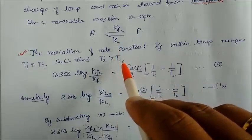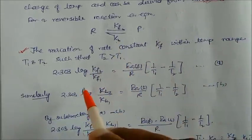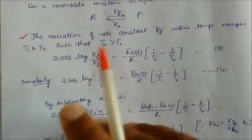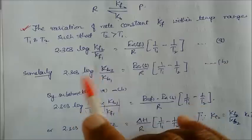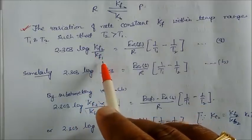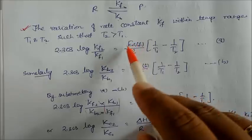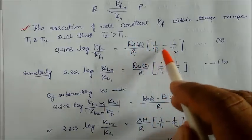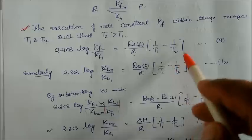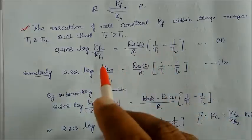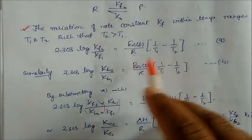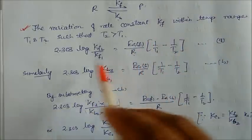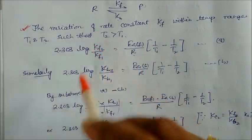According to the Arrhenius equation, we can write: 2.303 log(Kf2/Kf1) = Ea(forward) / R × (1/T1 − 1/T2), where Ea is the activation energy for the forward reaction and R is the gas constant. Just note this down for now; we will discuss it in detail in a coming chapter.